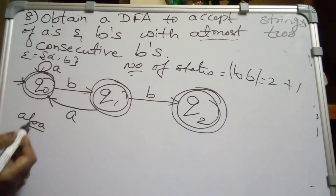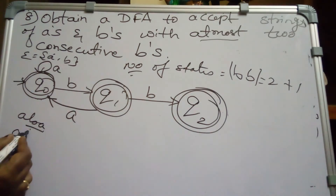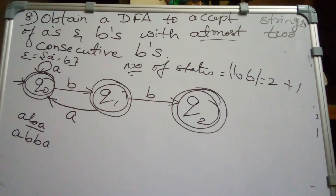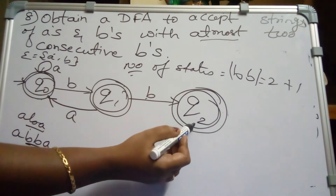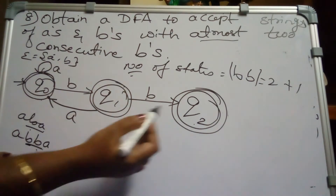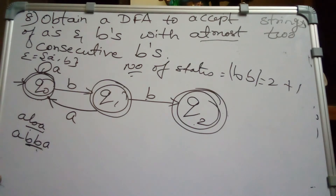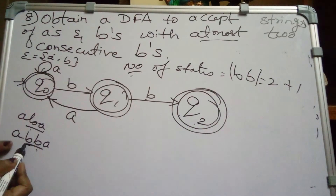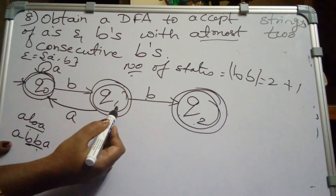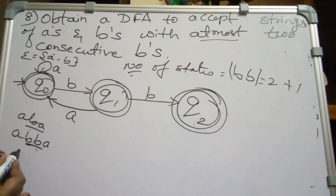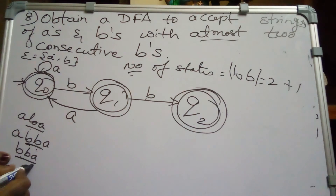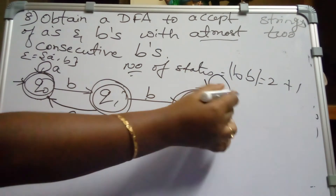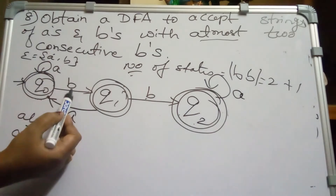If the string is ABBA it must be accepted since it has only two consecutive B's. Q2 also has two input symbols A and B. For Q2 on A: strings like BBA or ABBA — two consecutive B's followed by A — must be accepted, so Q2 on A loops back to Q0.